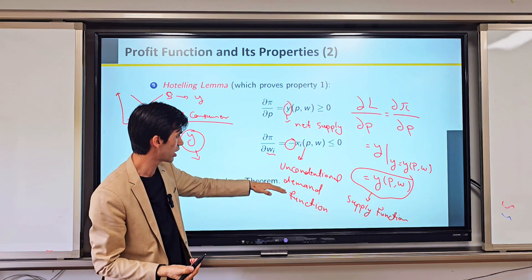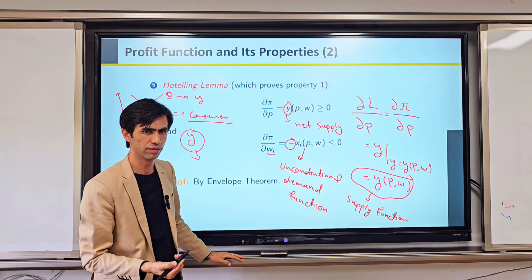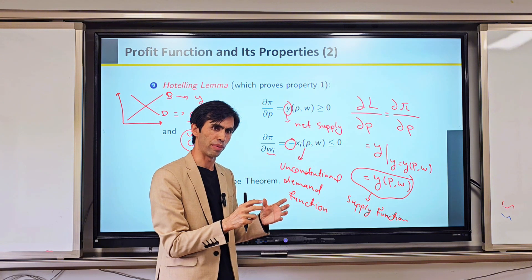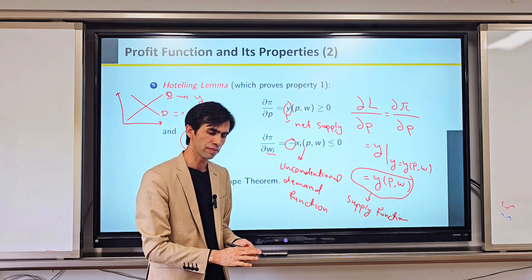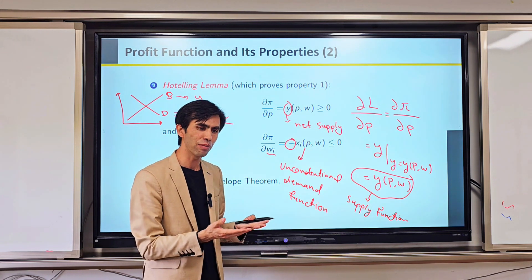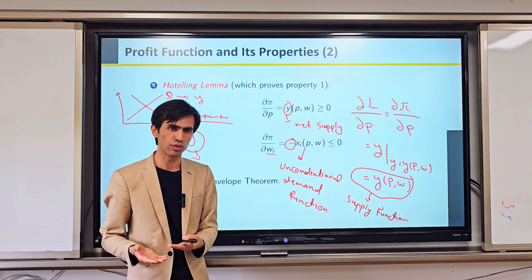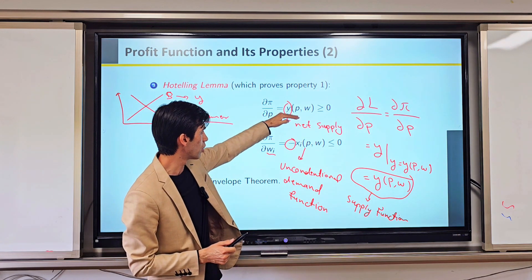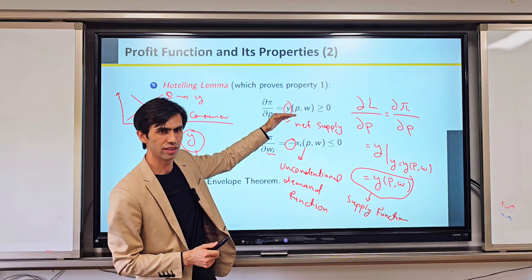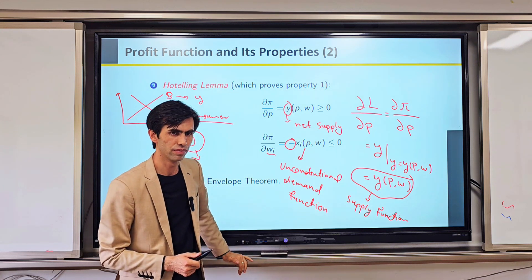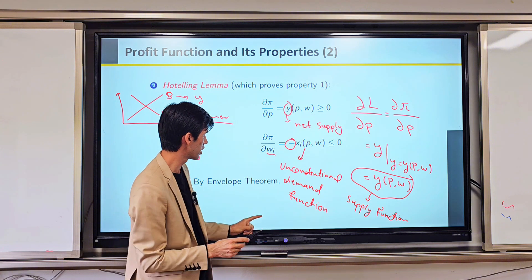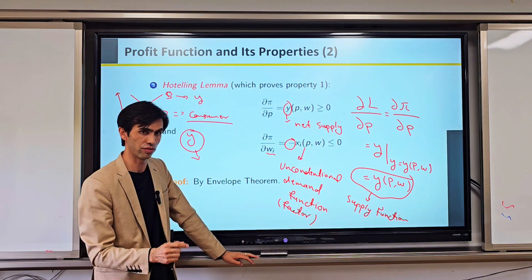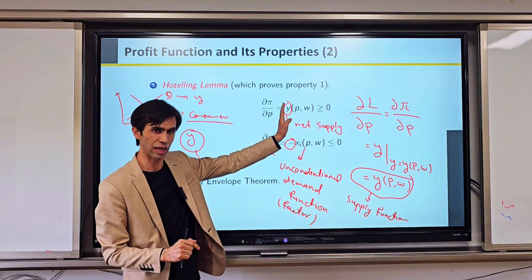We only talk about conditional or unconditional when we are talking about input demand — factor demand. When talking about input demand, there are two ways to think about it: in terms of prices, and in terms of output. How much input we need depends on how much output we produce, and also how much input we buy depends on the price of that input and output. Since supply itself is Y, for supply we only think about P and W. That is why conditional and unconditional terminology applies only to the factor demand function — our input demand — not to supply, because supply itself is a quantity Y.